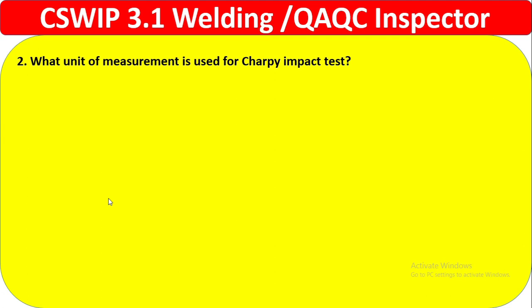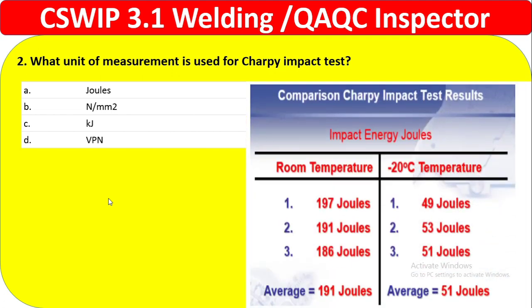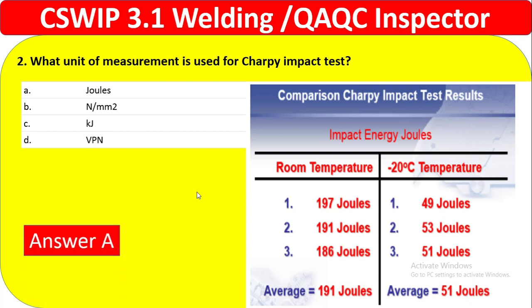Question 2: What unit of measurement is used for the Charpy impact test? Option A is Joules, B is Newton per millimeter square, C is kilo-Joule, D is VPN. The Charpy impact test result is expressed in Joules — for example, 197 Joules at room temperature and 49 Joules at minus 22 degrees centigrade. So the correct answer is option A, Joules.